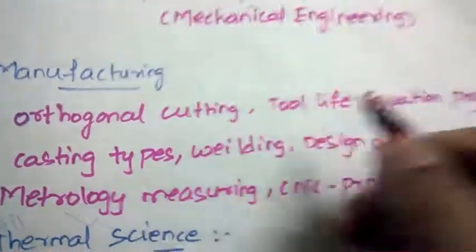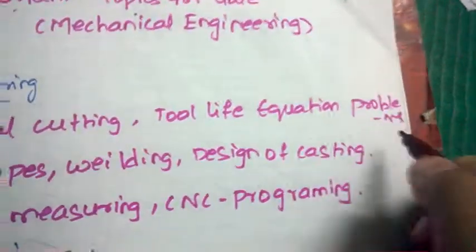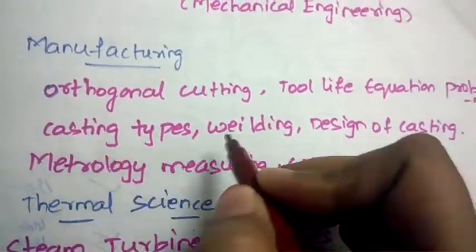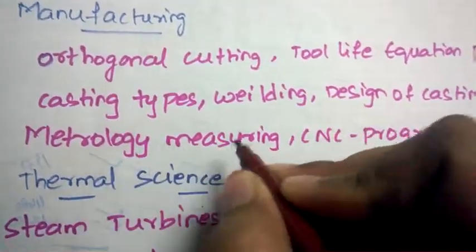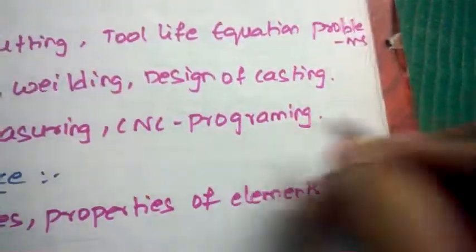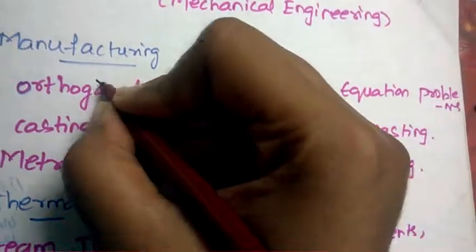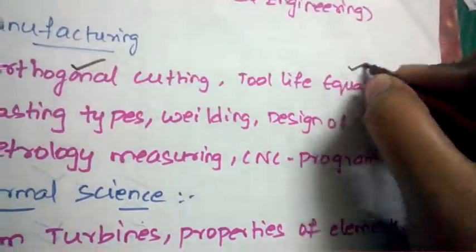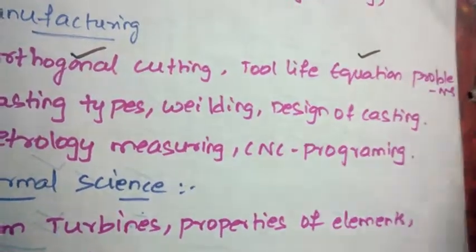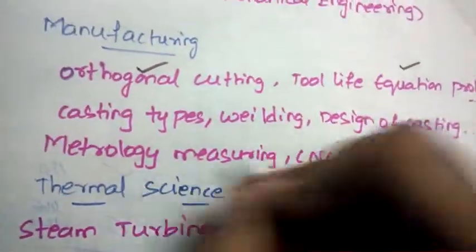Orthogonal cutting, tool life equation related problems, casting types, welding, design of casting, metrology measuring, CNC programming. Out of which these all are important, but orthogonal cutting is very most important. Tool life equation problems will be asked for sure, and metrology measuring is also very important. Concentrate more on these three topics to gain more marks.